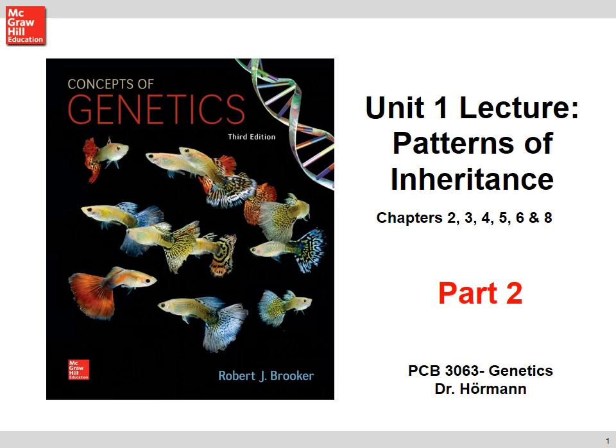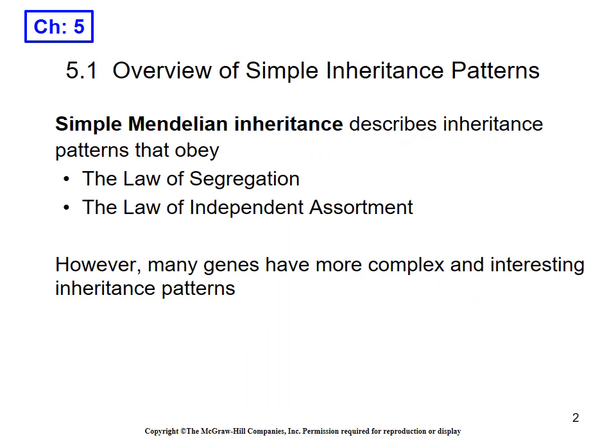Alright, so without further ado, let's go ahead and start perusing through Chapter 5. Chapter 5 is going to take a look at inheritance patterns, and it will basically talk about the fact that Mendel wasn't always correct when he talked about dominant versus recessive and its phenotypical expression. So before we get into some variations, let's talk about the fact that in our previous discussions, we did mention that when it comes to simple Mendelian inheritance, we do know that there are definitely some patterns that need to be obeyed.